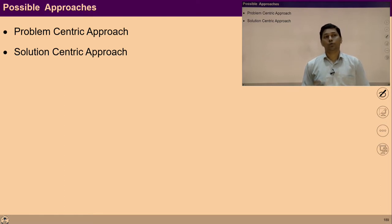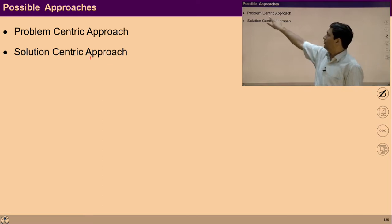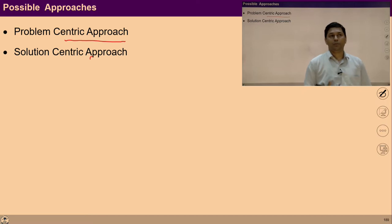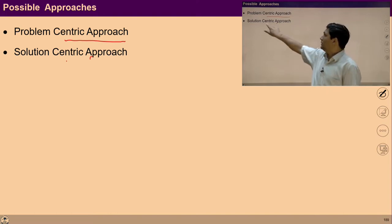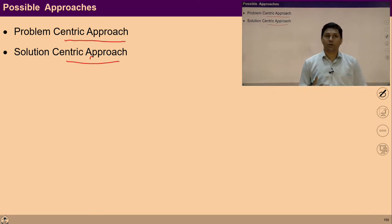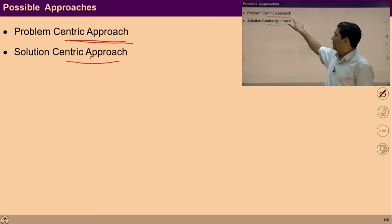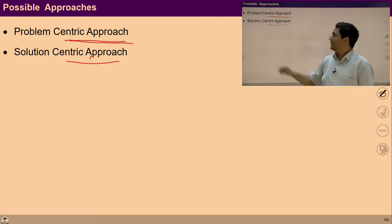There are two possible approaches when we critically analyze the present state. Number one: problem-centric approach, which means we are only focusing on the problems and trying to find out their solutions. In the problem-centric approach, we are primarily focusing only on the problem and trying to get rid of it by any means.